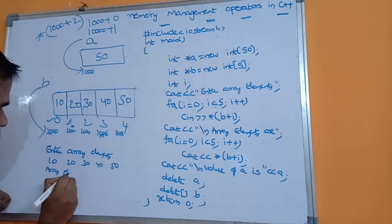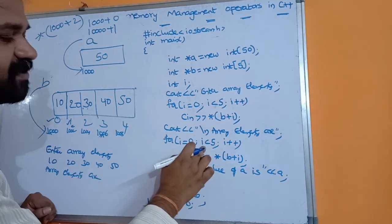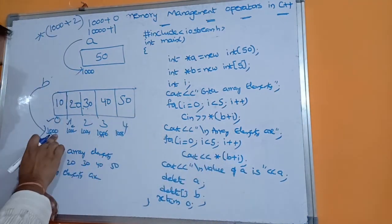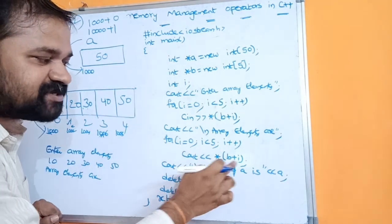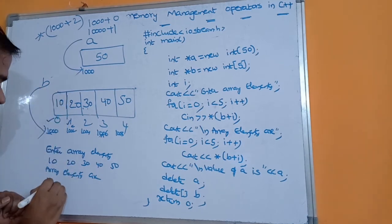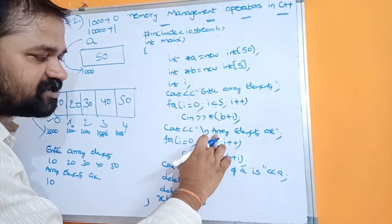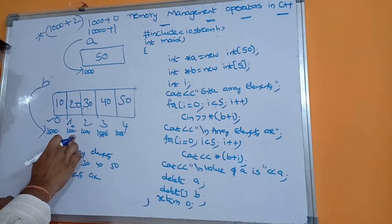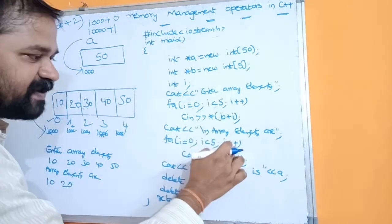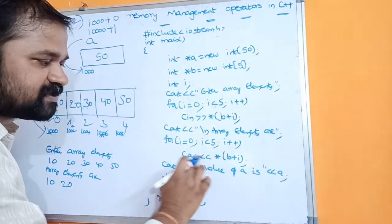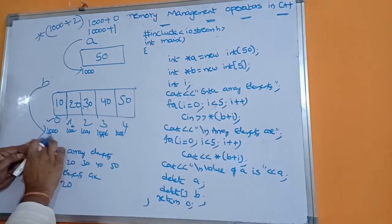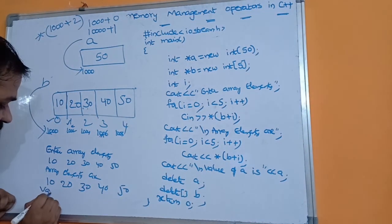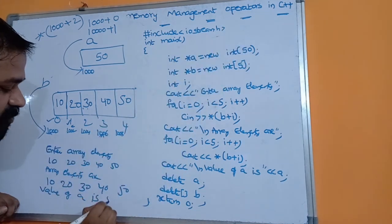Next, "Array elements are" gets printed. In the display loop, i=0, 0<5 is true. cout << *(b+i): b is 1000, 1000+0 = 1000, so value 10 gets printed. i becomes 1: 1000+1 means address 1002, value 20 gets printed. i becomes 2: 1000+2 means address 1004, value 30 gets printed. Then 40 and 50 get printed. After the loop, "Value of a is 50" gets printed, since a is a pointer variable with value 50.